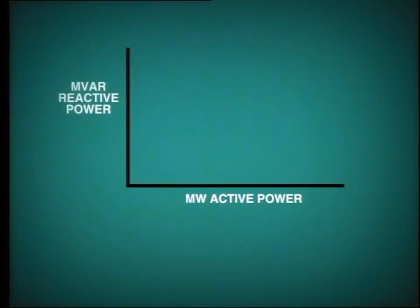Megawatts and megavars act with different phase relationships to voltage. Active power is in phase while reactive power acts 90 degrees out of phase. The combination of megawatts and megavars is known as MVA, that is megavolt amperes.